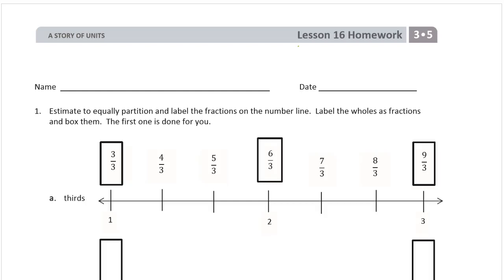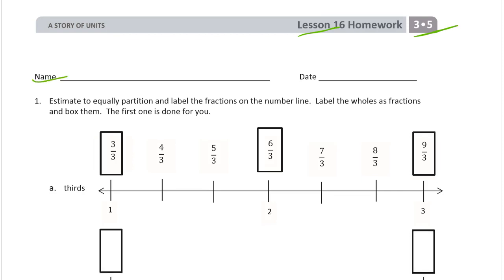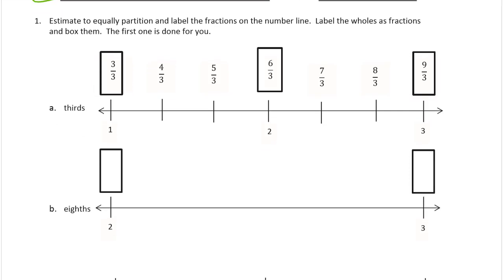Welcome to homework for lesson 16. This is module 5 of grade 3. Get your name on here first, please. We're estimating to equally partition and label fractions on the number line. Label the wholes as fractions and box them. The first one is done for you.